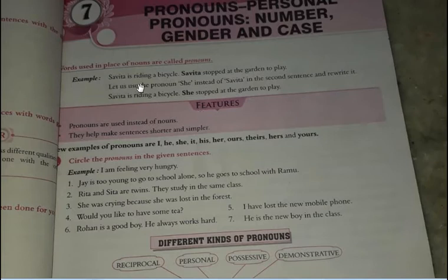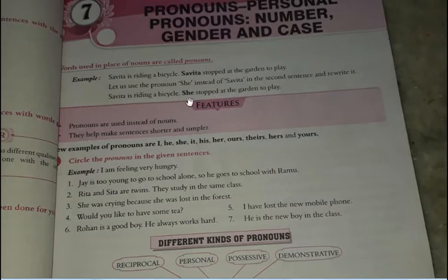For example: Savita is riding a bicycle. Savita stopped at the garden to play. Here we can use 'she' in place of Savita — 'She stopped at the garden to play.' Can you see why 'she' is used? Because she is a feminine gender — she is a girl, so we use 'she'.